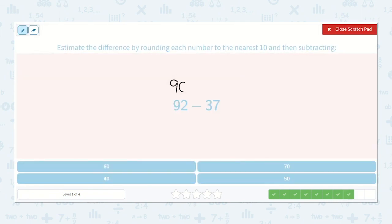92 will round to 90, and then we will subtract 40, because 37 will round up to 40. 9 minus 4 is 5, so 90 minus 40 is 50.